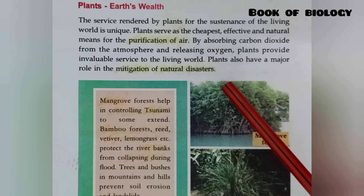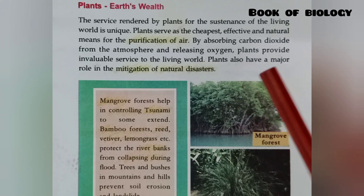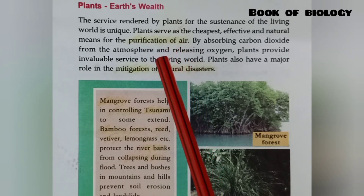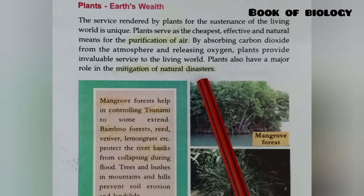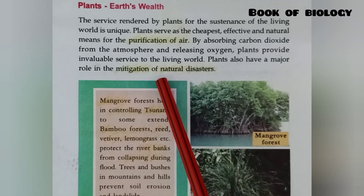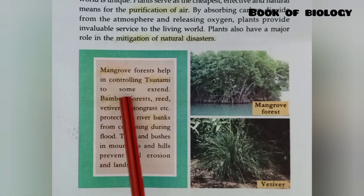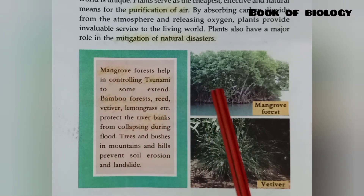What are the other uses of plants? Plants help in the purification of air and in mitigation of natural disasters. For example, mangrove forests help in controlling tsunami to some extent. Mangrove forests are also known as kandal kadugal.